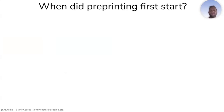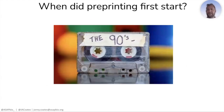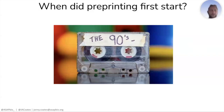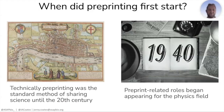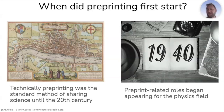If I asked you when preprinting first started, I imagine many of you would say the 1990s, when arXiv emerged. And arXiv is almost synonymous with preprinting. But this isn't actually true. Technically, preprinting was just the standard method of sharing science right up until the 20th century, because we didn't have the current system of peer review. A preprint — a manuscript shared when the authors are ready — is how science was shared for a very long time.